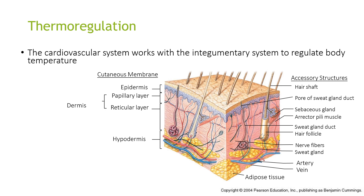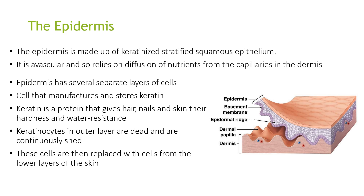The cardiovascular system works with the integumentary system to regulate body temperature in a process known as thermoregulation. The epidermis is characterised by stratified squamous epithelium. It is avascular and relies on diffusion of nutrients from capillaries in the dermis. The epidermis has several layers of cells that manufacture and store keratin — a protein that gives hair, nails and skin their hardness and water resistance. Keratin cells in the outer layer are dead and are continuously shed, then replaced by cells from the lower layers.